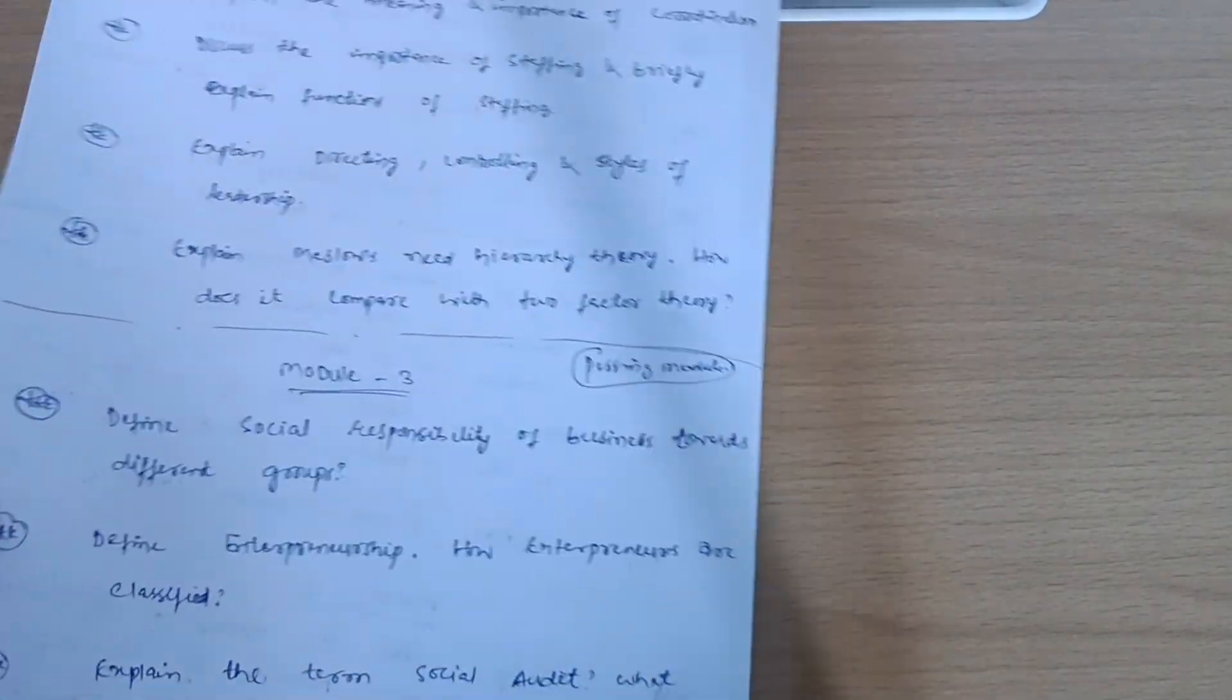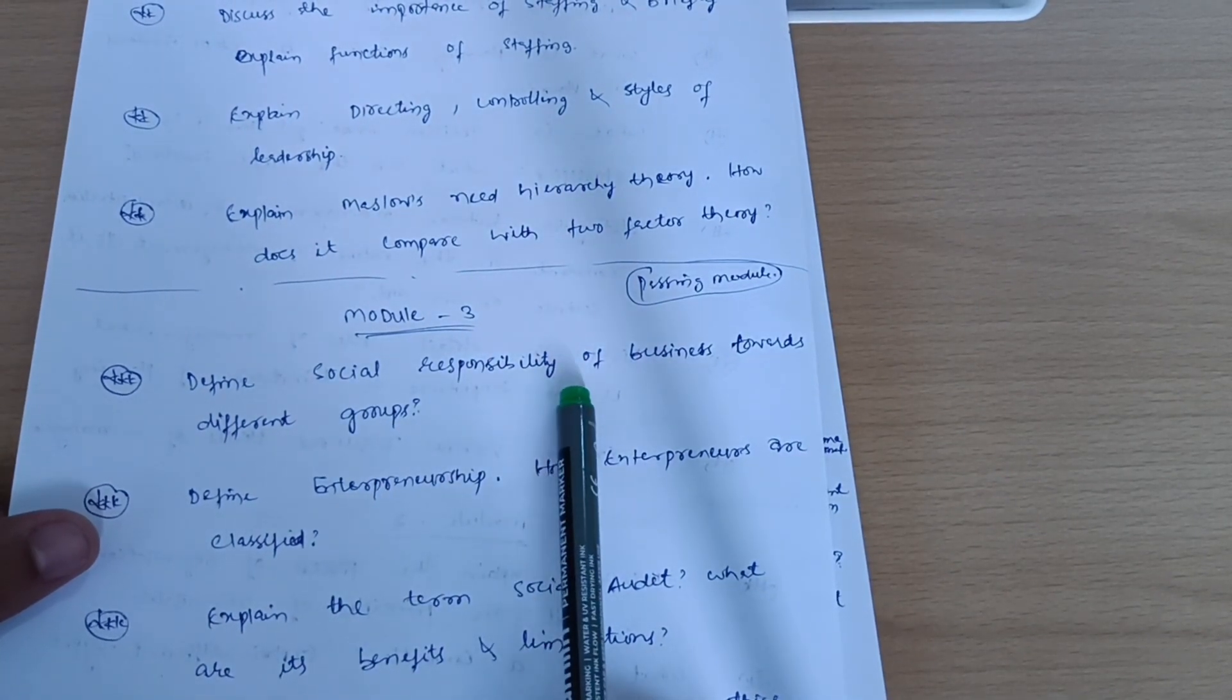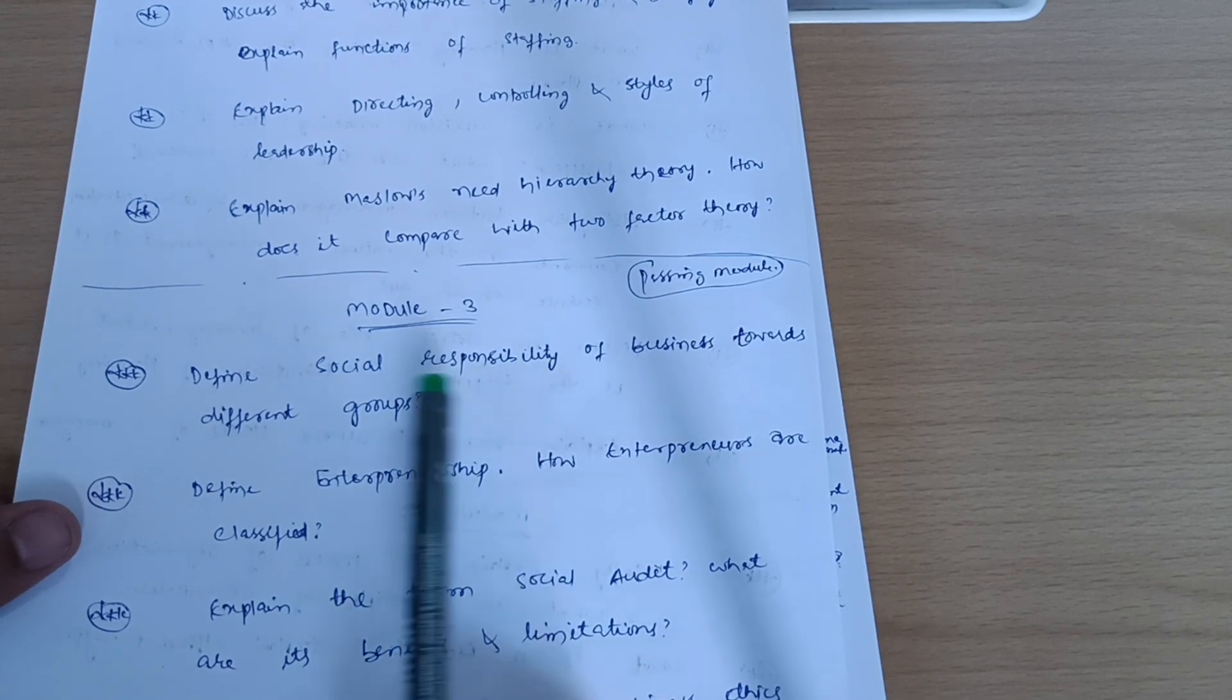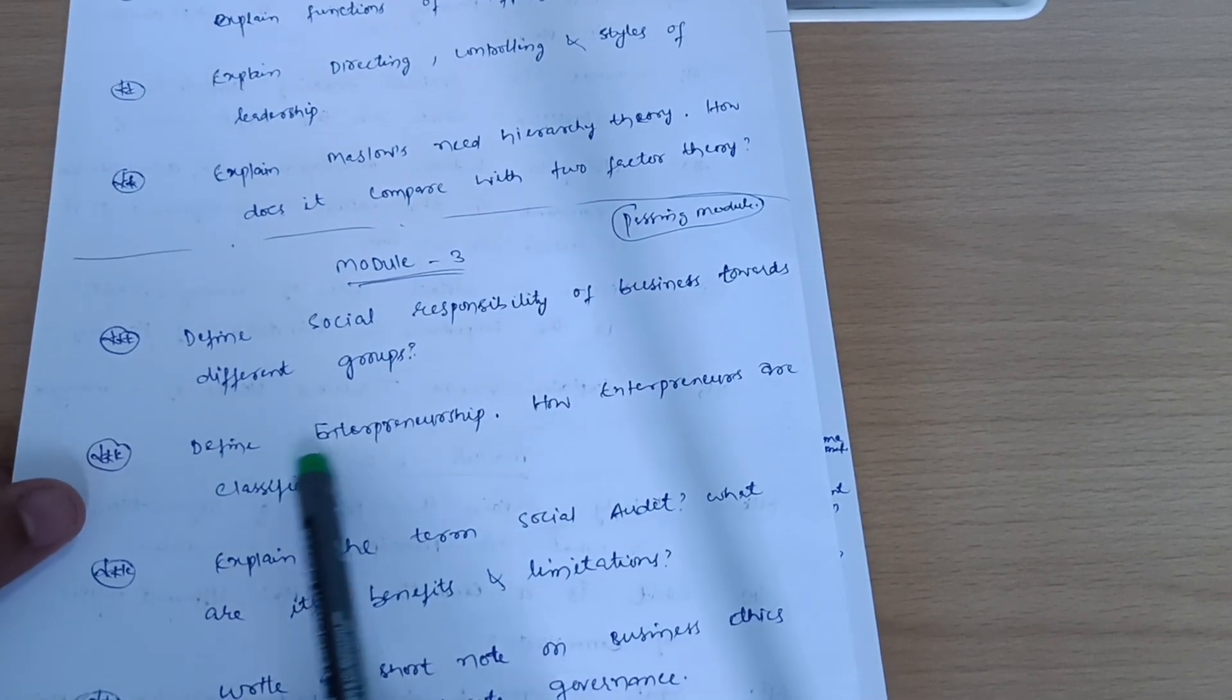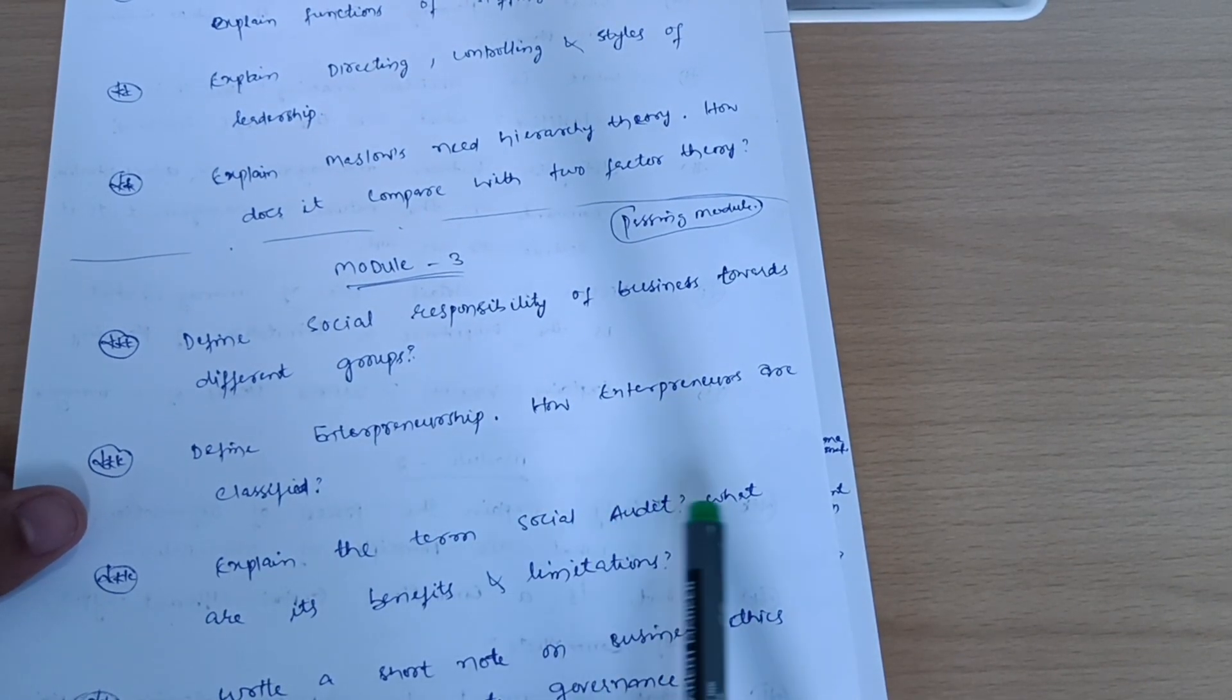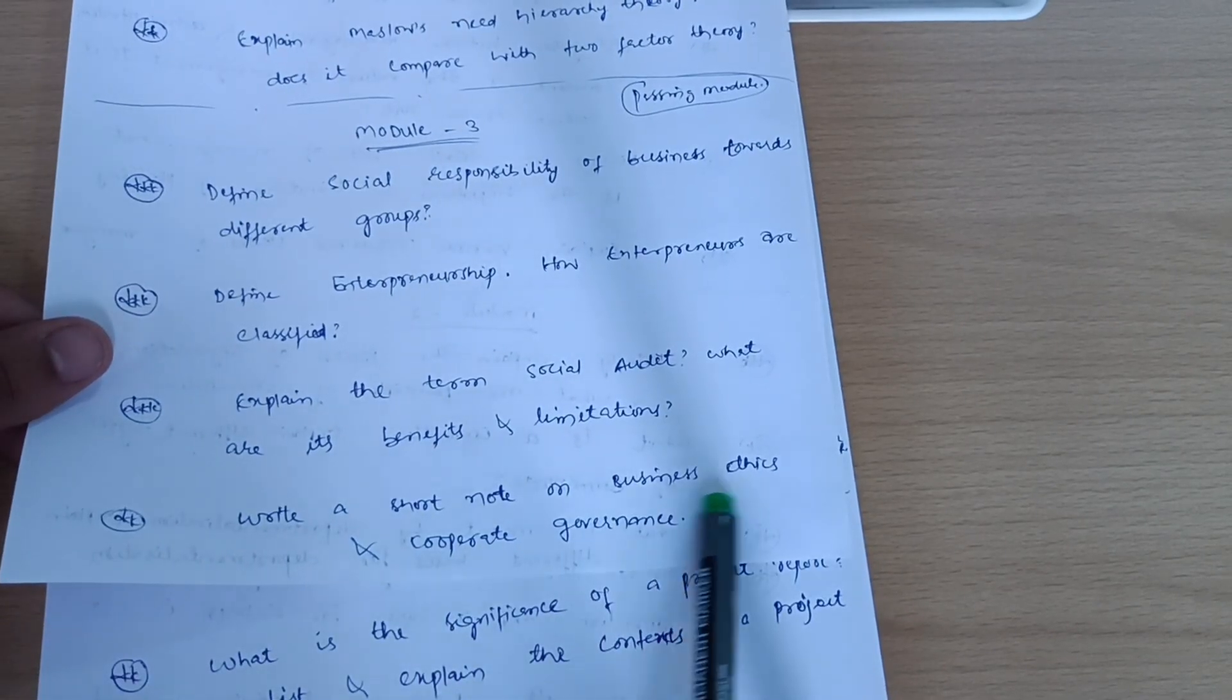So next passing module is Module 3. Define social responsibility. These will be the fixed questions in your examination, so try to cover these questions first. Define social responsibility of business towards different groups. Define entrepreneurship, how entrepreneurs are classified. Explain the term social audit, what are its benefits and limitations. Write a short note on business ethics and corporate governance.